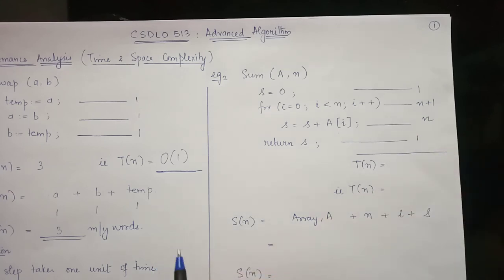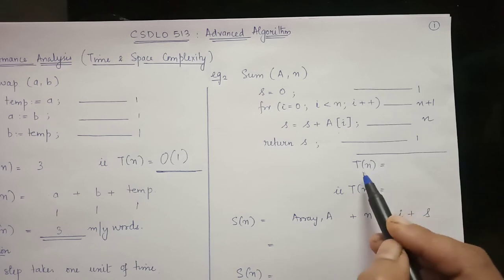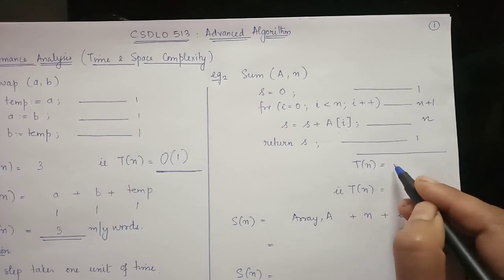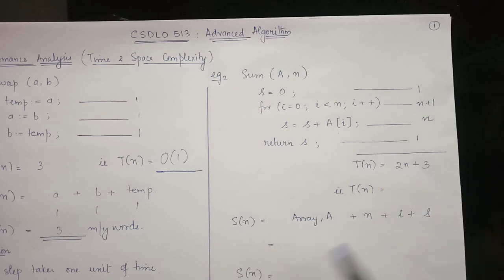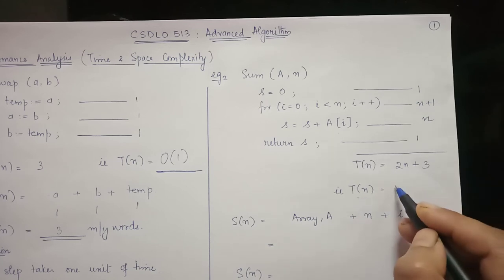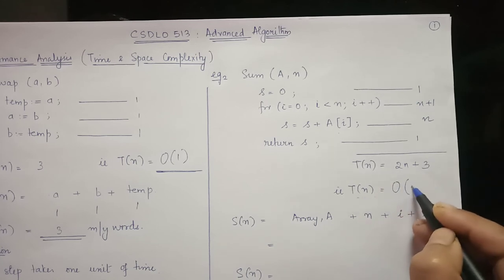So in short, the total time, so T of n can be represented as 2n plus 3. Now T of n can be represented as big O of n.